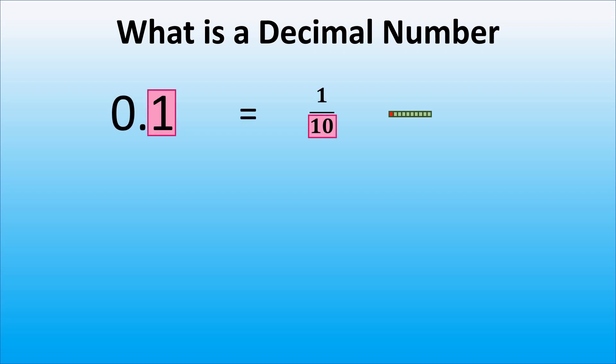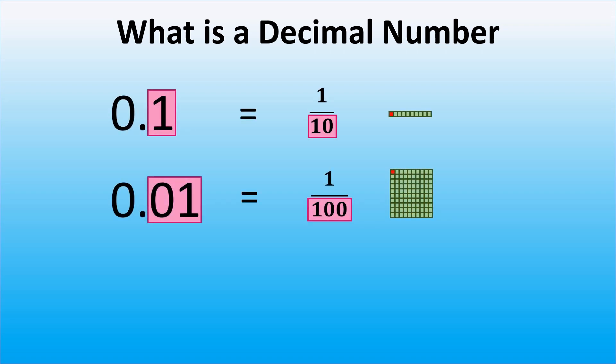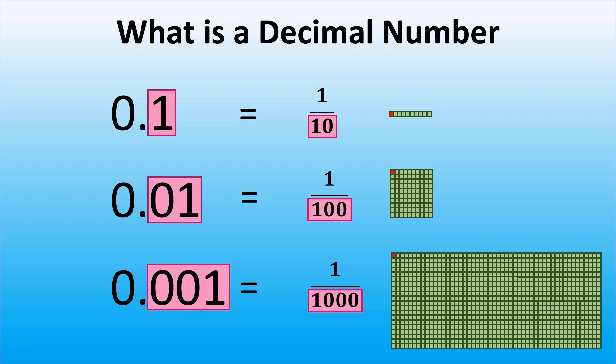Did you notice a pattern? Each time we move 1 digit more to the right, past the decimal point, the fractional part becomes 10 times smaller than before. Why is that? It is because in the decimal system, the value of a digit depends on its position, and decimal numbers are a way to represent fractions in that system.